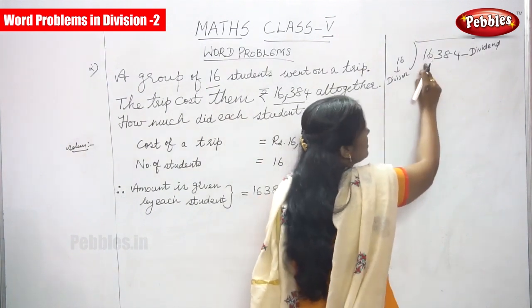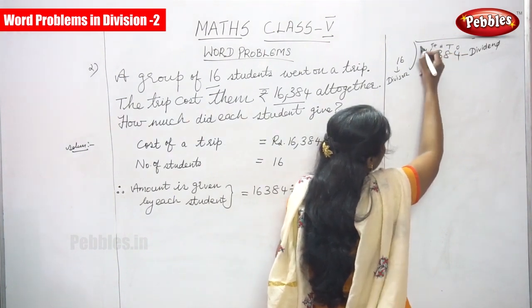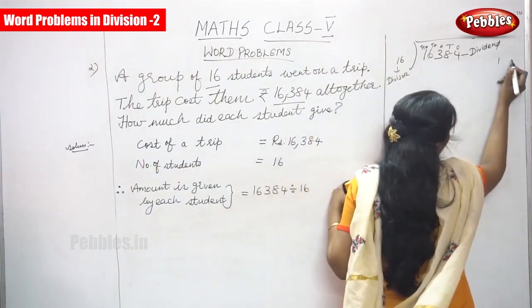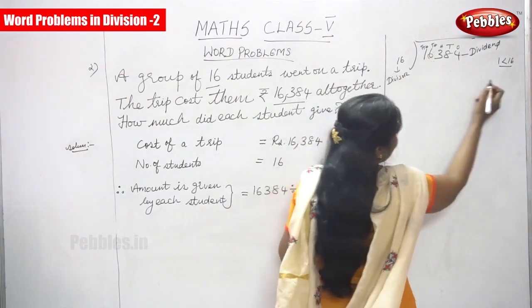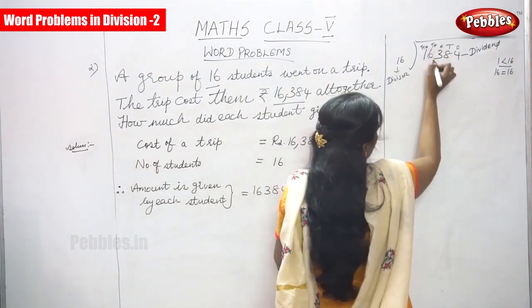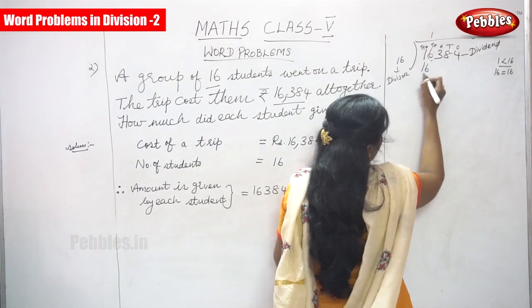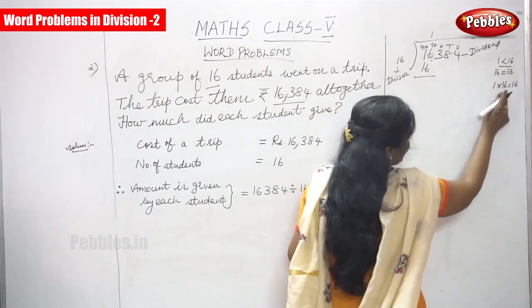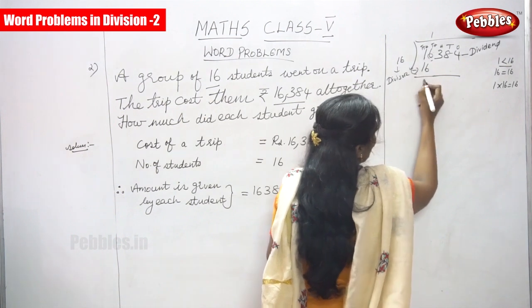Take the first digit. The digits are: 1s, 10s, 100s, 1000s, 10,000s. Take the first digit — 1 is less than 16, so you can't divide. Go to the next digit. That is 16, which equals 16. So 16 divided by 16: 1 times 16 gives 16.